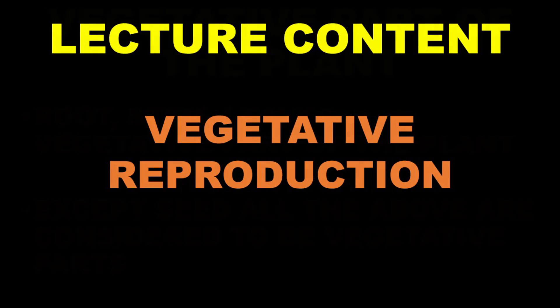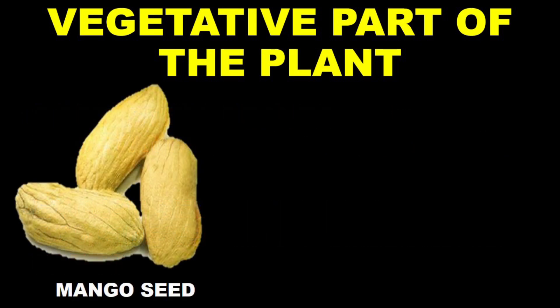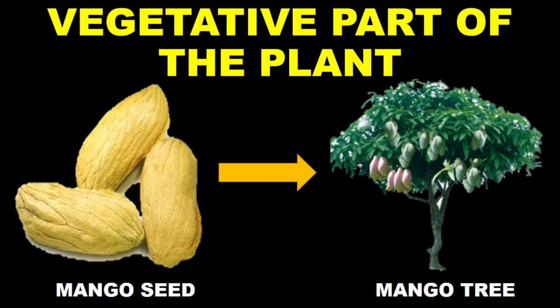First of all, you should know what vegetative reproduction is and what the vegetative parts of the plant are. Except for the seed, either roots, stem, or leaf — they are all known as vegetative parts of the plant. This is important because when you sow a seed, it takes a lot of time. For example, if you plant a mango seed, it takes a long time to become a mango tree.